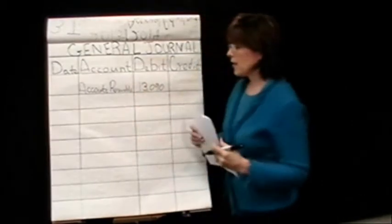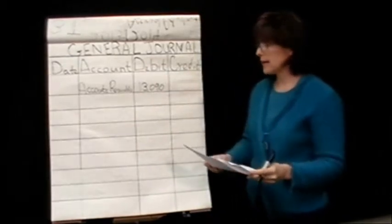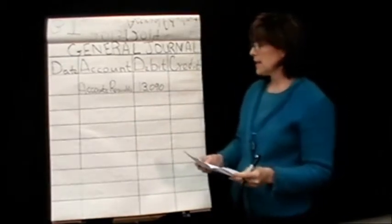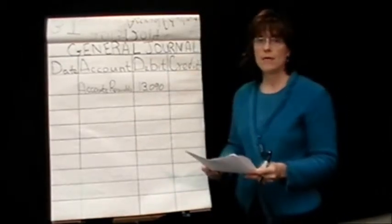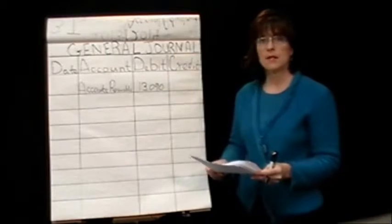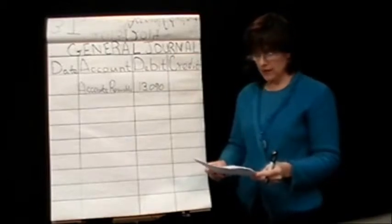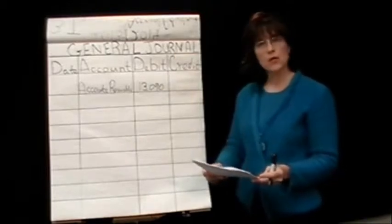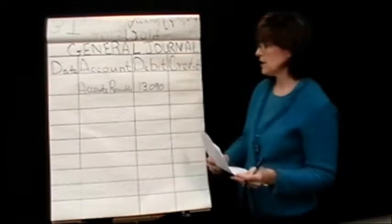The other side of this entry — looking at your handout — it tells you that for accrued revenue we would credit some sort of revenue account. The revenue account we've been using for services in this chapter is fees earned.